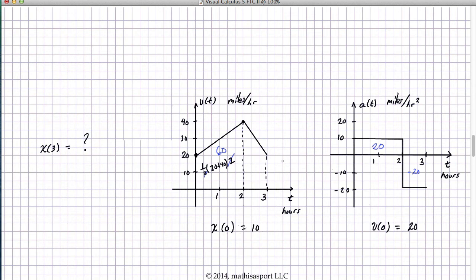Here I have another trapezoid. Let's get this one. It's going to be one half the average of the two heights, two parallel sides. Again, 40 plus 20, and the distance between the two parallel sides in this case is 1. So I have an area of 30. So x of 3 is not 90, not the 60 plus 30, but we add in the initial condition.